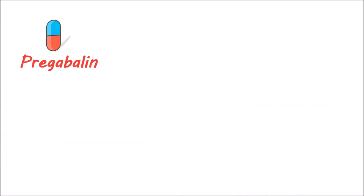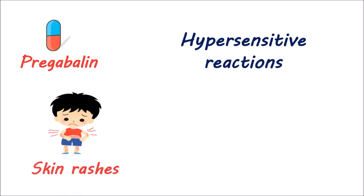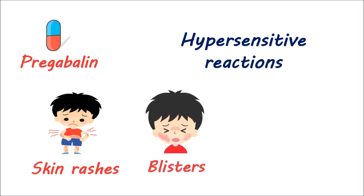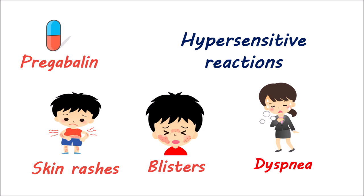Similarly, this drug can produce hypersensitive reactions resulting in skin redness and skin rashes, and some blisters on the skin. Dyspnea, difficulty breathing, and wheezing can also be observed with the use of pregabalin. But these hypersensitive reactions are not observed in all patients, and they may be observed in only a few. If these symptoms develop, then the use of pregabalin should be discontinued.